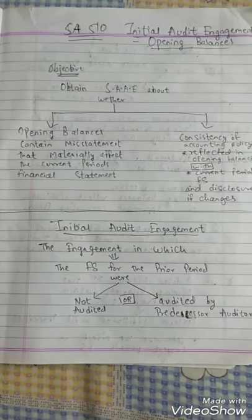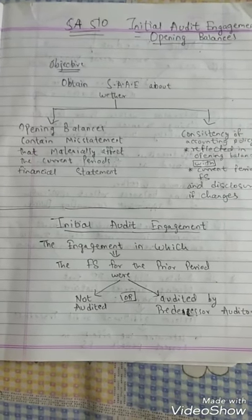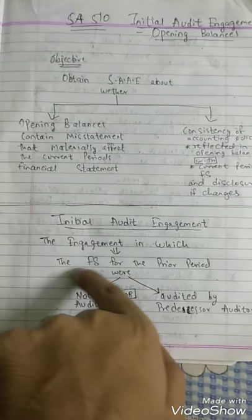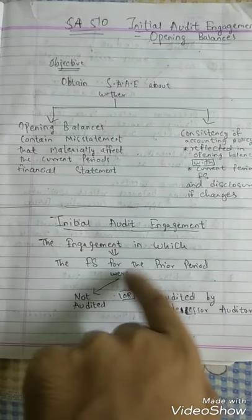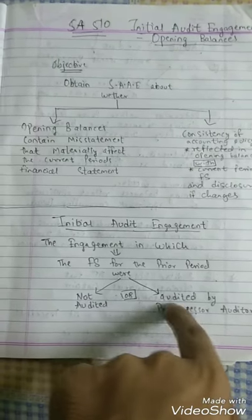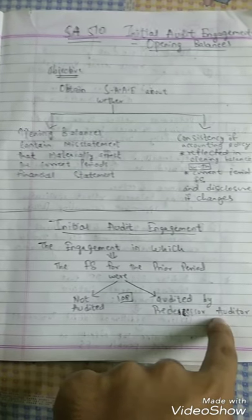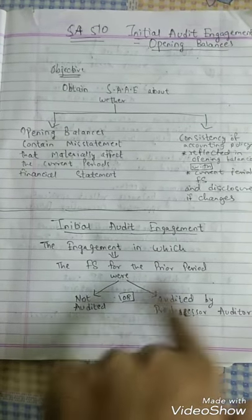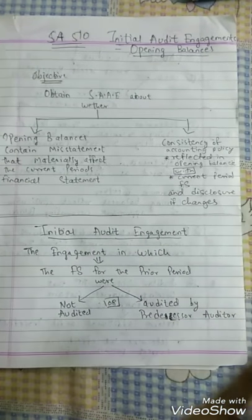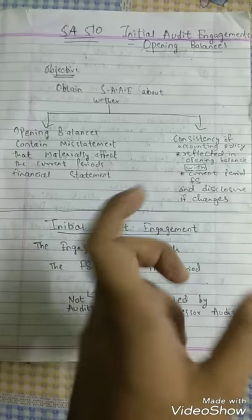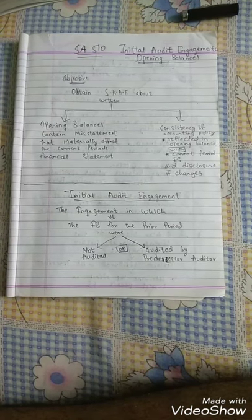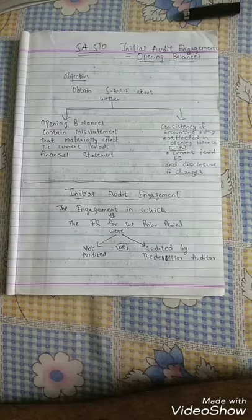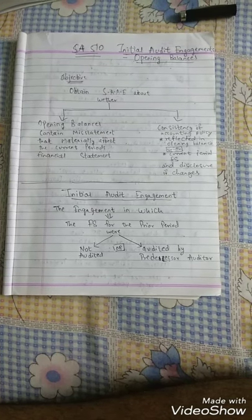The objective is to understand what an initial audit engagement means — when this standard is applied. It applies to an engagement in which financial statements for the prior period were either not audited, or were audited by a predecessor auditor. The word 'prior period' is used because the last period may not necessarily be a 12-month period.